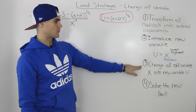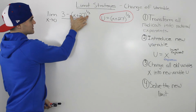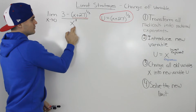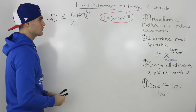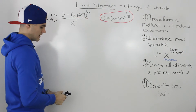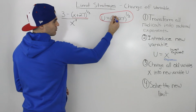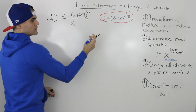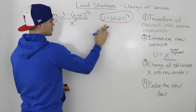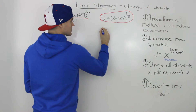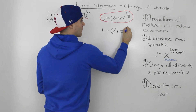Now step 3: we have to change all x variables in the limit into the new variable u. We've already taken the expression (x plus 27)^(1/3) and set it equal to u. But we also need to express the denominator x (to the power of 1) and the approach condition x→0 in terms of u. Starting with the denominator x, notice from our substitution u equals (x plus 27) to the power of 1/3, rewritten as u equals (x + 27)^(1/3).